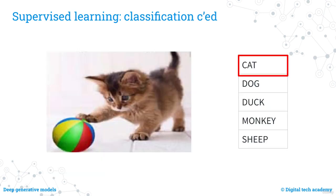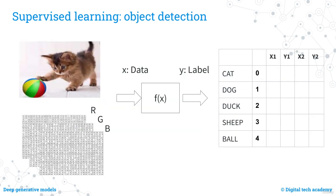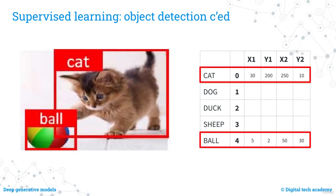As easily understood, the classification function classifies an image as a cat. Object detection involves identifying and locating objects within an image, using a bounding box — a rectangle drawn around the object. The object detection function returns not only the category of detected objects, but also the coordinates of the bounding boxes, typically the top-left and bottom-right corners. In the example, two bounding boxes are identified correctly: one tagged as a cat, the other as a ball.